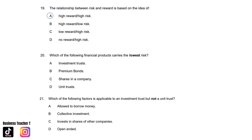Question twenty: Which of the following financial products carries the lowest risk? A. Investment trusts. B. Premium bonds. C. Shares in a company. Or D. Unit trusts. And the answer is B. Premium bonds. Question twenty-one: Which of the following factors is applicable to an investment trust but not a unit trust? A. Allowed to borrow money. B. Collective investment. C. Invest in shares of other companies. Or D. Open ended. And the answer is A. Allowed to borrow money.